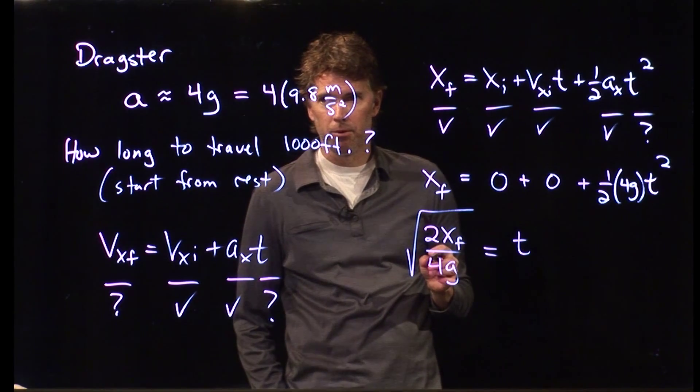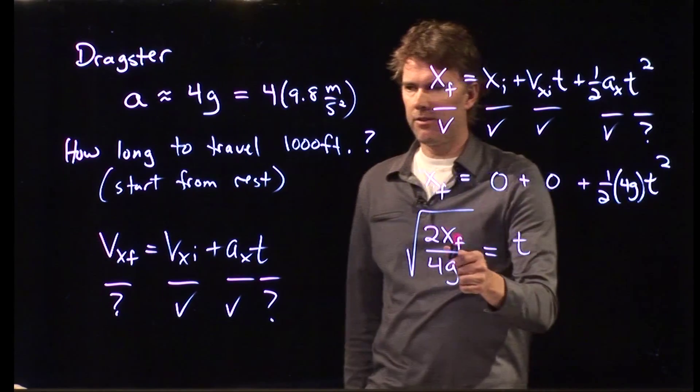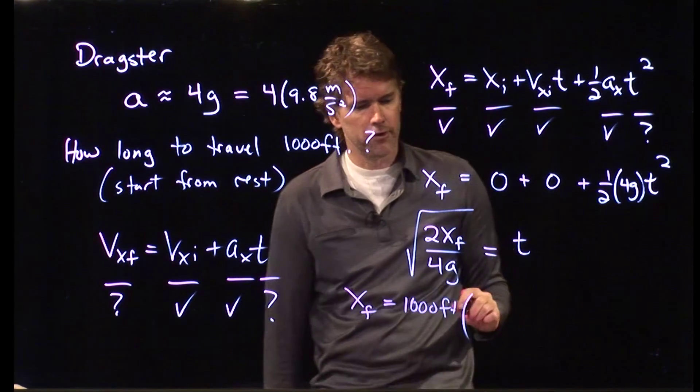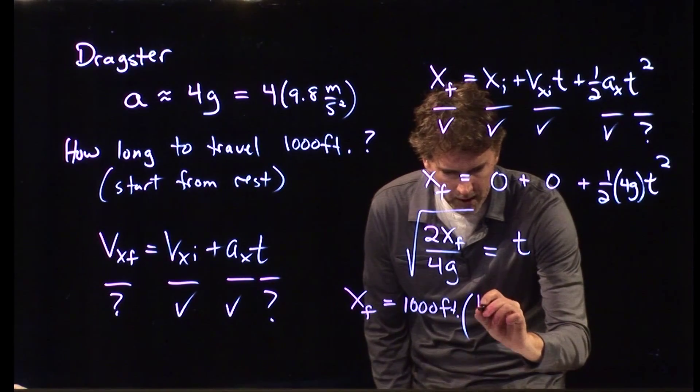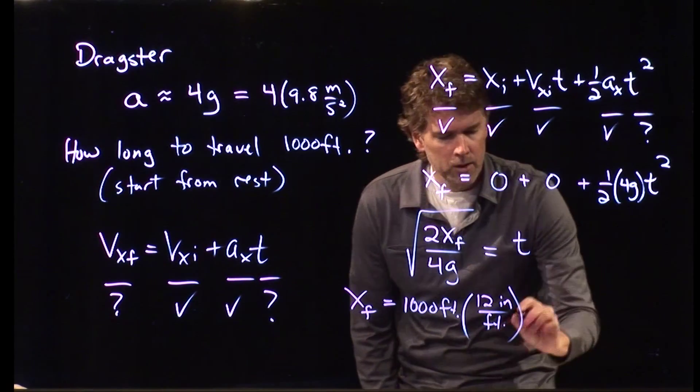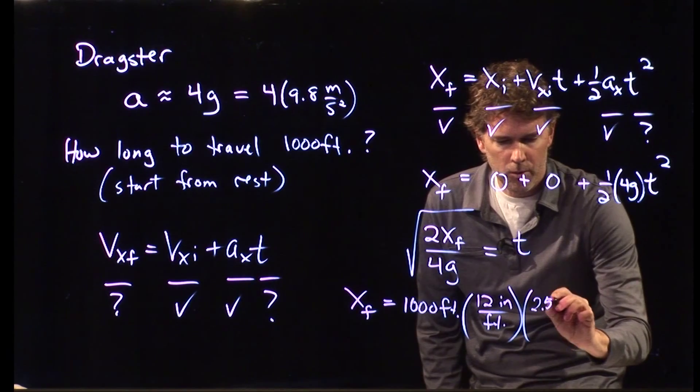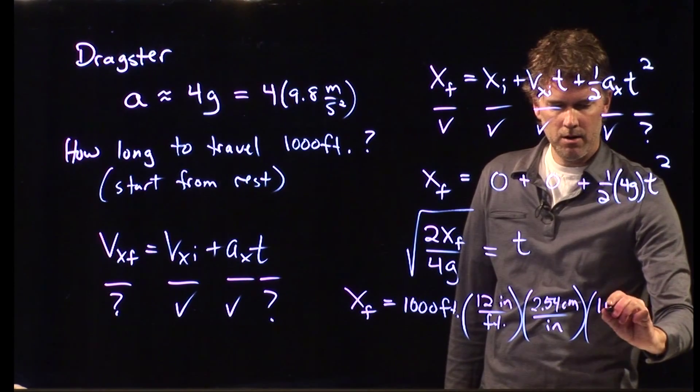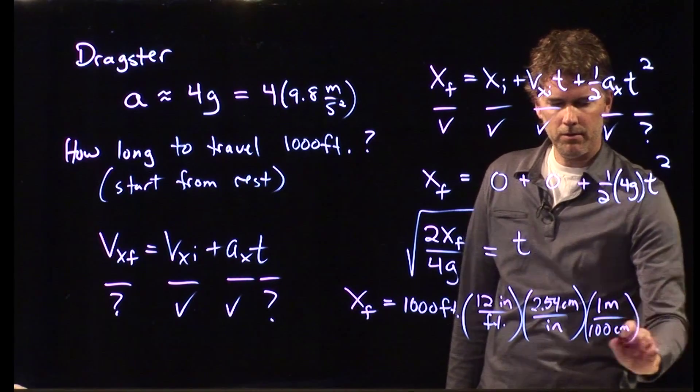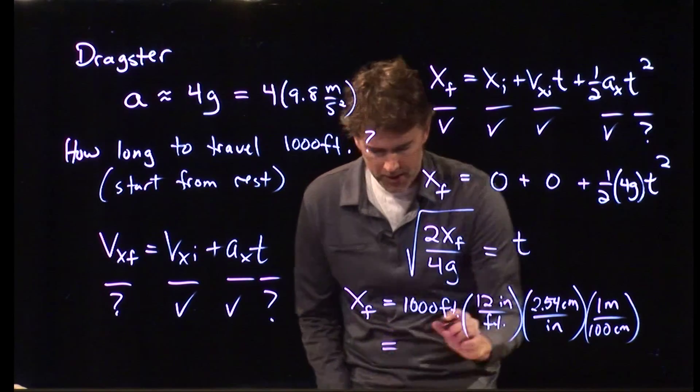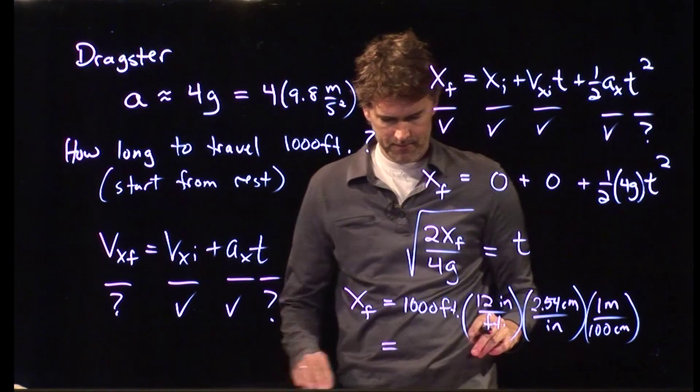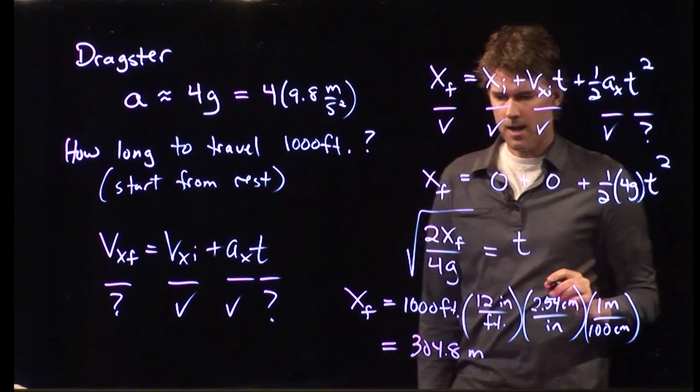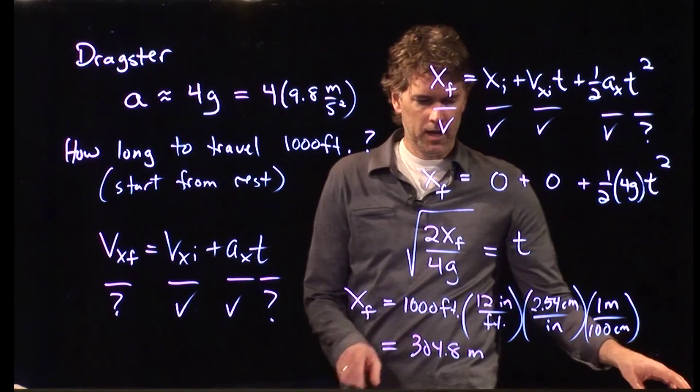So we have all those numbers. Now, what we do need to change is, xf was in feet, and so we need to convert that to SI units. So 1,000 feet, if I convert that to SI units, I just multiply by one each time. I've got 12 inches in a foot. We have 2.54 centimeters per inch. And we have 1 meter equals 100 centimeters. And now you can convert those into your calculator and double-check with me, because I've got 304.8 meters. 304.8 meters.